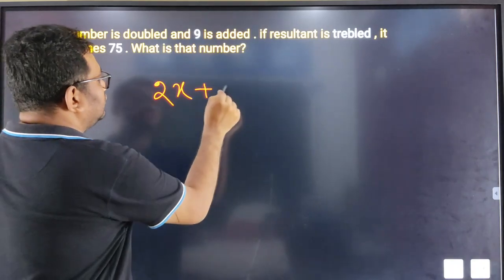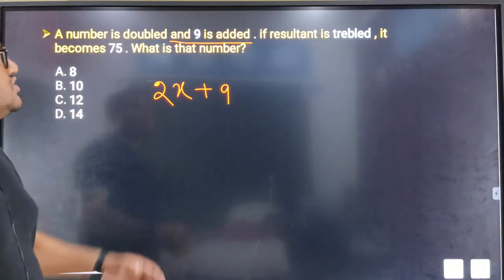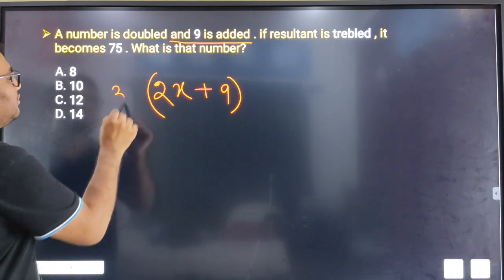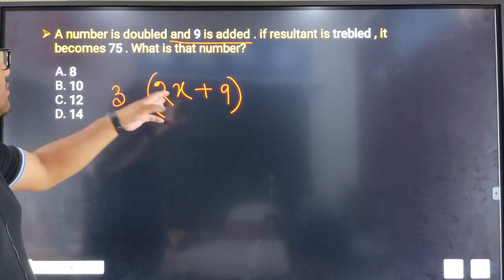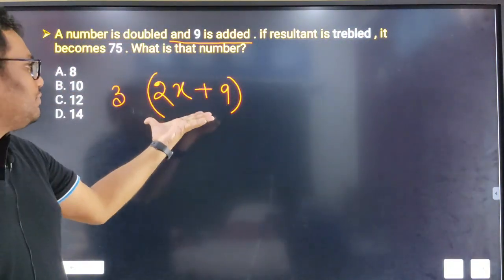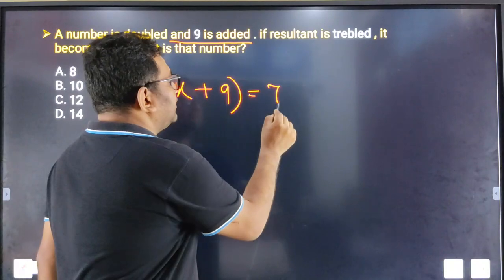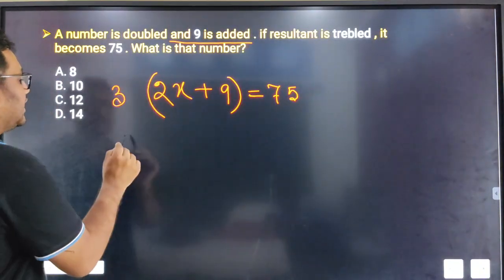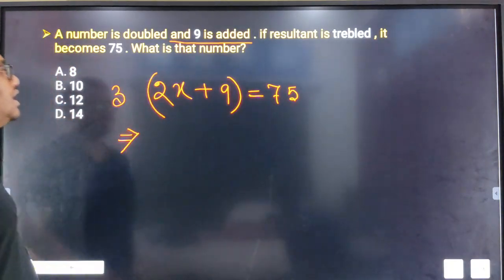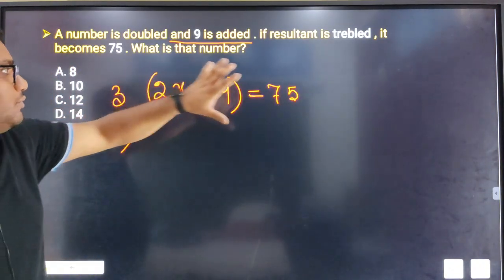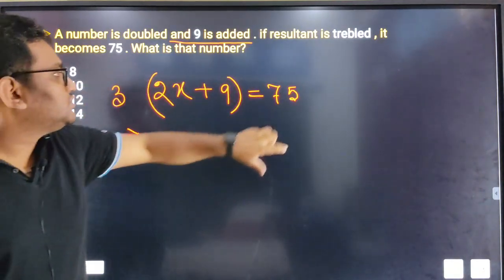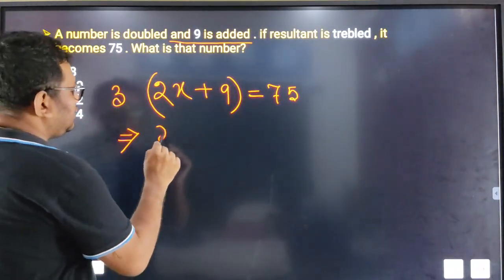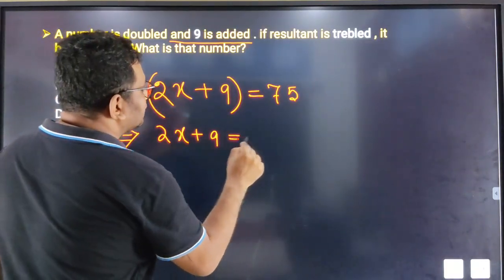If 9 is added, and the result is tripled, it becomes 75. So if the number equals 75, and we calculate X, then 2X plus 9 is equal to 75 divided by 3.